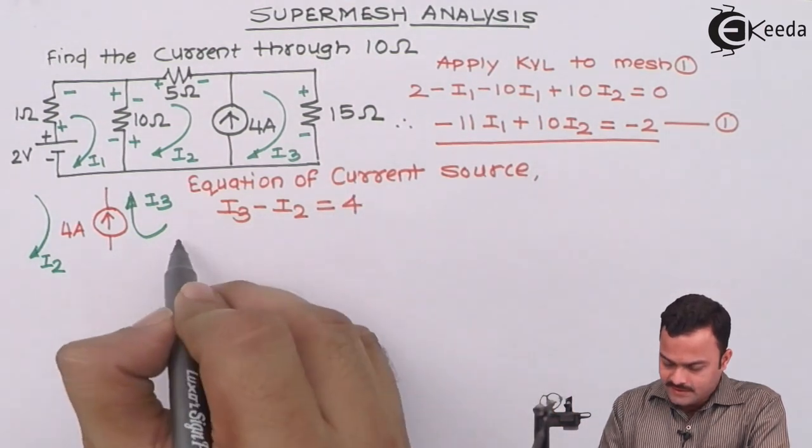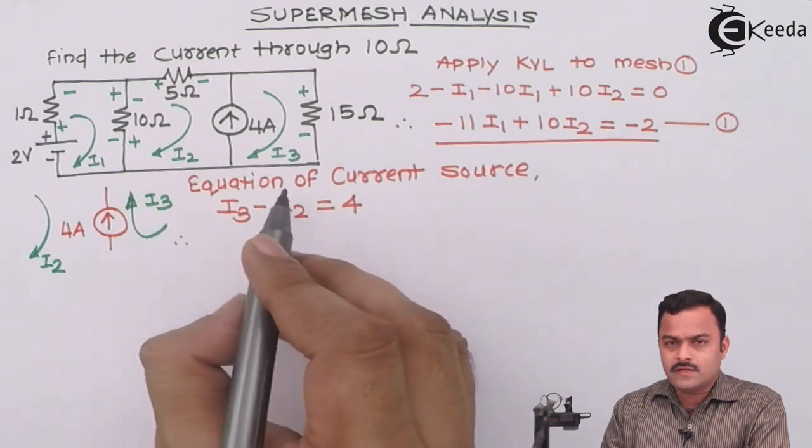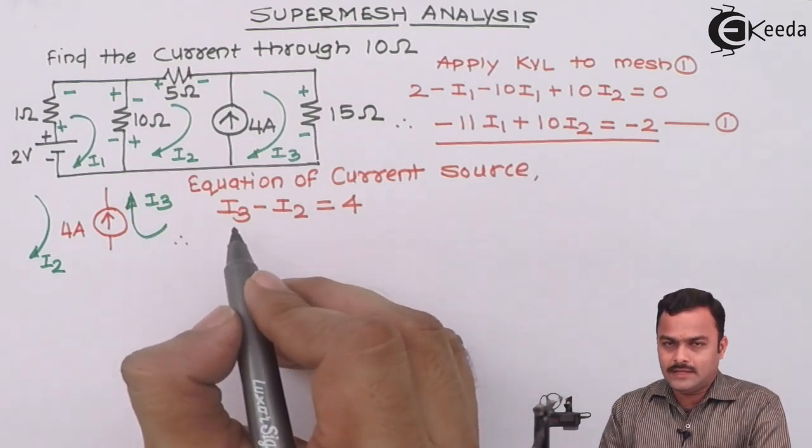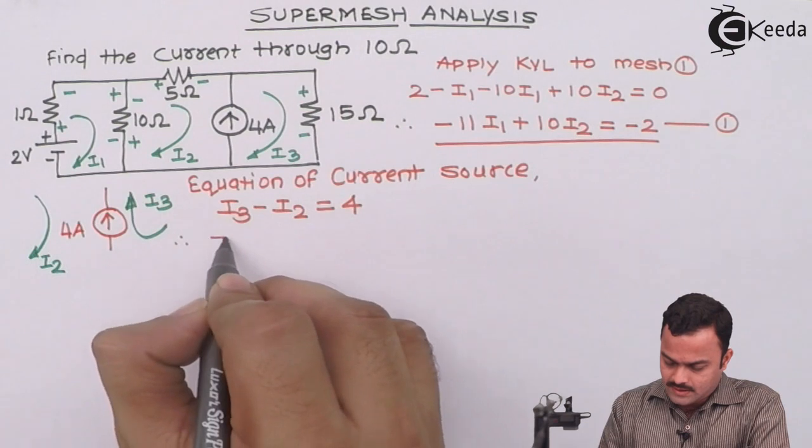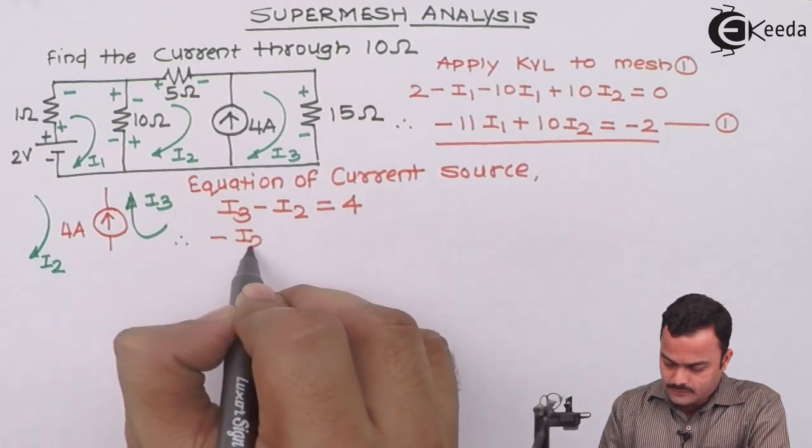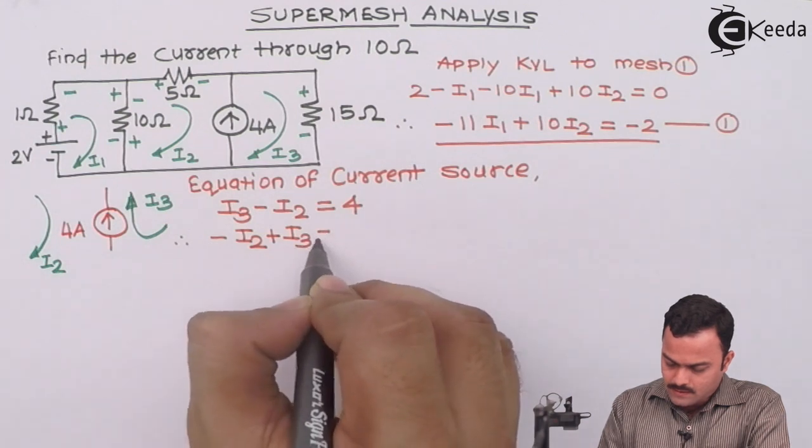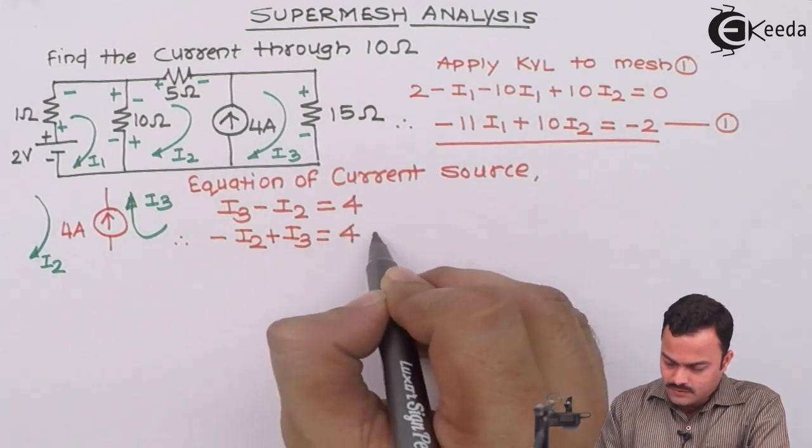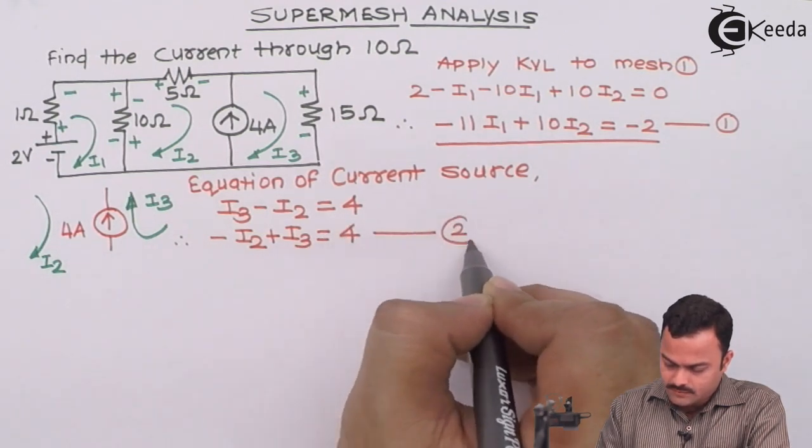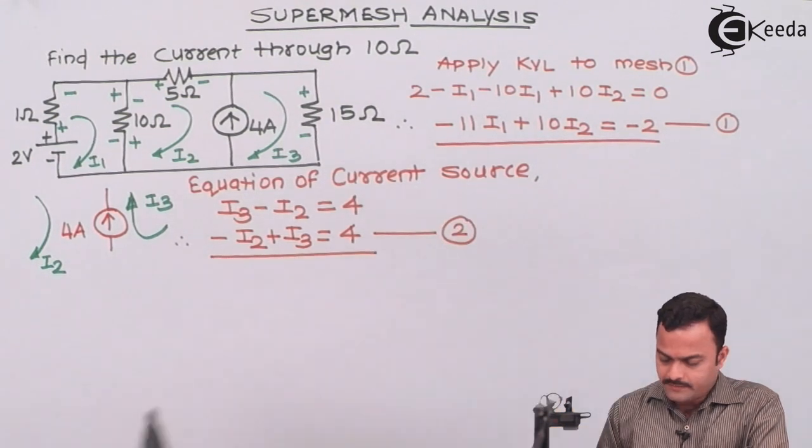Just rearrange as per the sequence, that means I1 comes first, then I2 and then I3. So it will be minus I2 plus I3 equal to 4. This becomes equation number 2 for our mesh analysis.